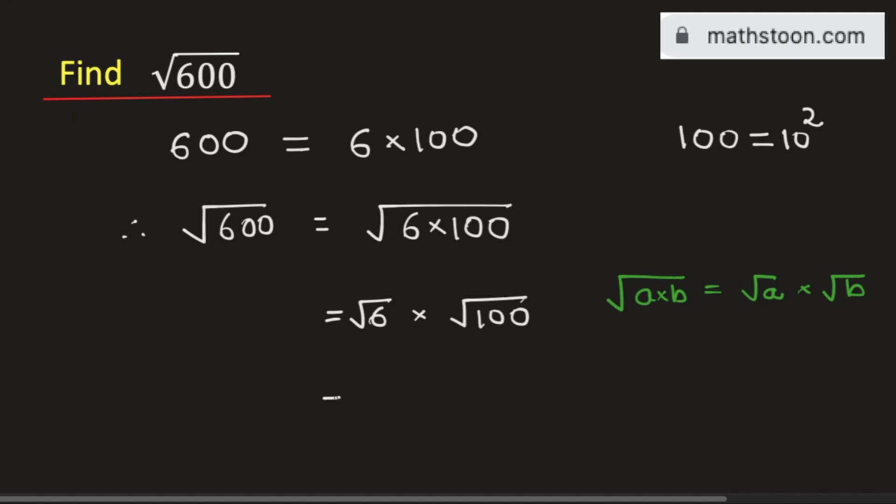Now see that square root of 6 cannot be simplified further, so we will write it as is, and square root of 100 is 10. Now multiplying, we get 10 square root of 6, and this is the value of the square root of 600.